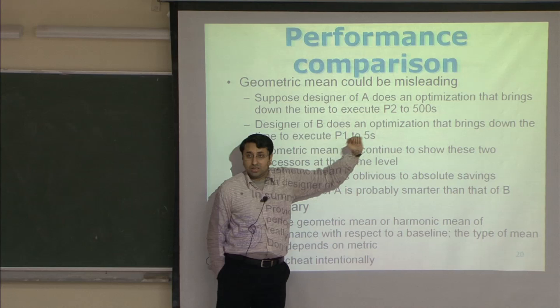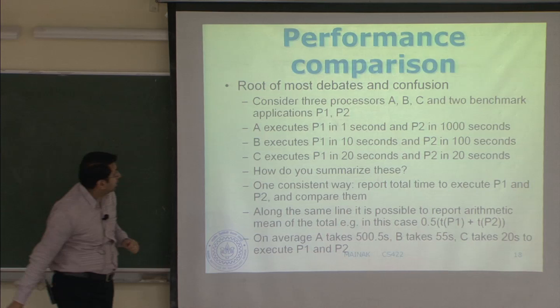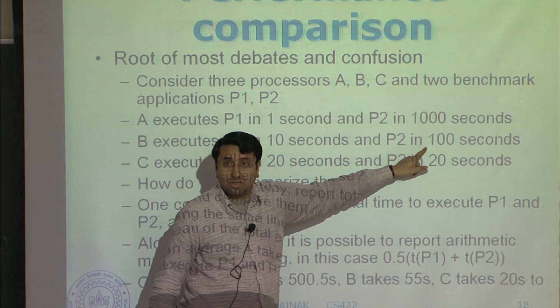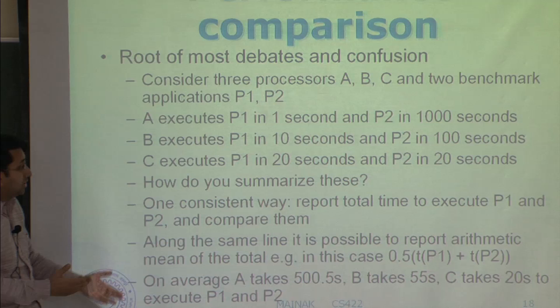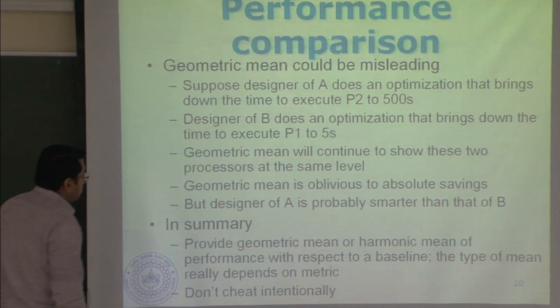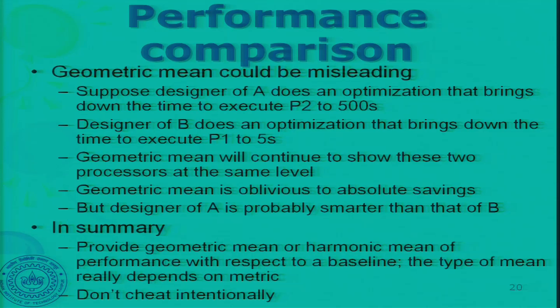If I take the ratio of these, comparing A and B, I have two ratios: for P1 the ratio is 1 over 10, and for P2 the ratio is 10. I take the geometric mean of them. For the new optimized machines A and B, doing the same computation gives the same geometric mean. So geometric mean is oblivious to absolute savings — that is the problem. Designer of A is actually smarter than designer of B, because designer of A saved 500 seconds whereas designer of B saved only 5 seconds.